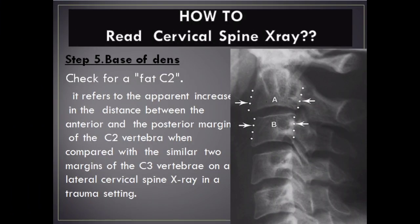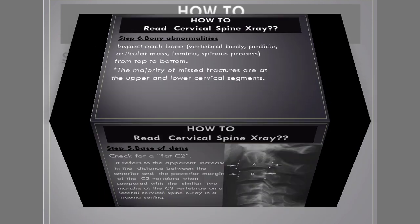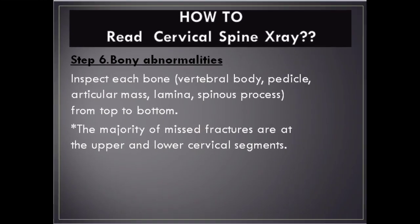Step 5 continued – Fat C2 sign: Check for the fat C2 sign. This refers to the apparent increase in the distance between the anterior and posterior margins of the C2 vertebra when compared with the similar two margins of the C3 vertebra on a lateral cervical spine X-ray in a trauma setting.